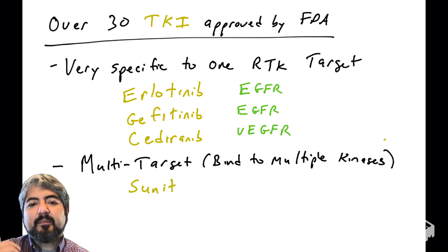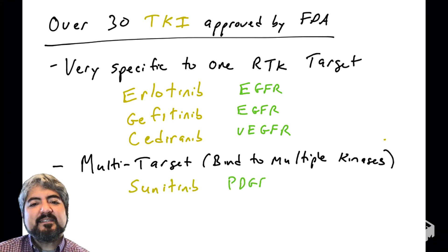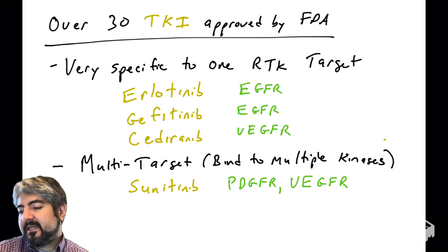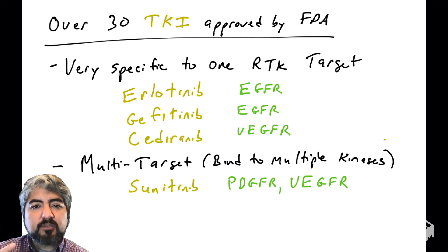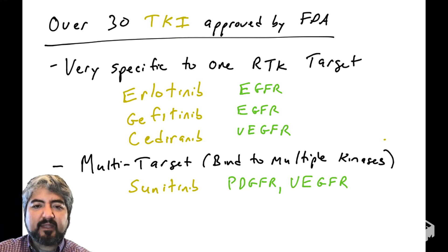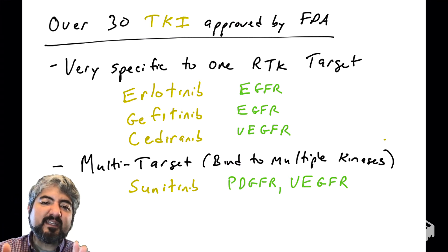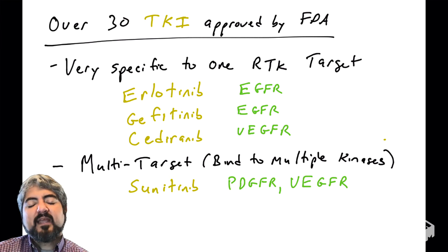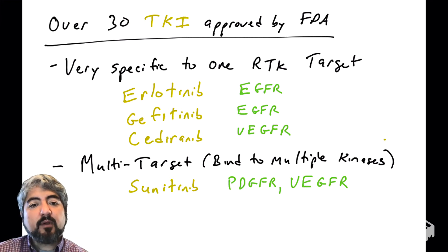Others are multi-targeted — they bind to many different tyrosine kinases. An example is sunitinib, which binds multiple growth factor receptors. It binds the ATP binding pocket of both PDGFR and VEGFR and stops them from phosphorylating their dimer partner.